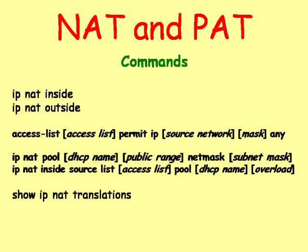The NAT inside source list command is used to configure the NAT translation by combining the access list with the pool of available IP addresses. The overload command upgrades the router to PAT translation. The show IP NAT translation command displays the NAT table and is very useful in troubleshooting problems.